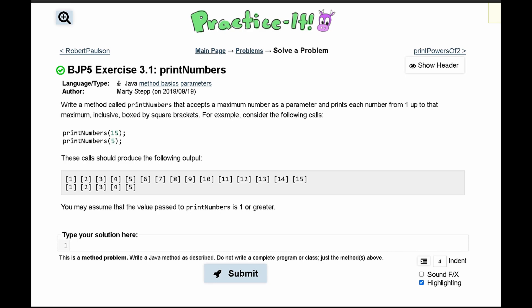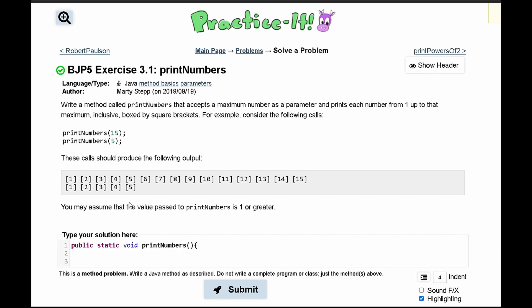For practicing exercise 3.1 printNumbers, we need to write a method. We have a public static void called printNumbers that accepts a maximum number as a parameter, so we'll say int max, and prints each number from one up to that maximum inclusive.